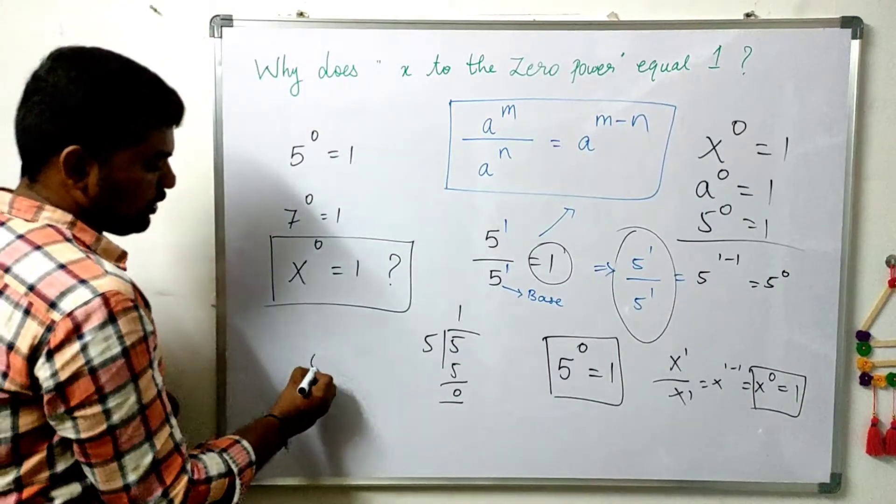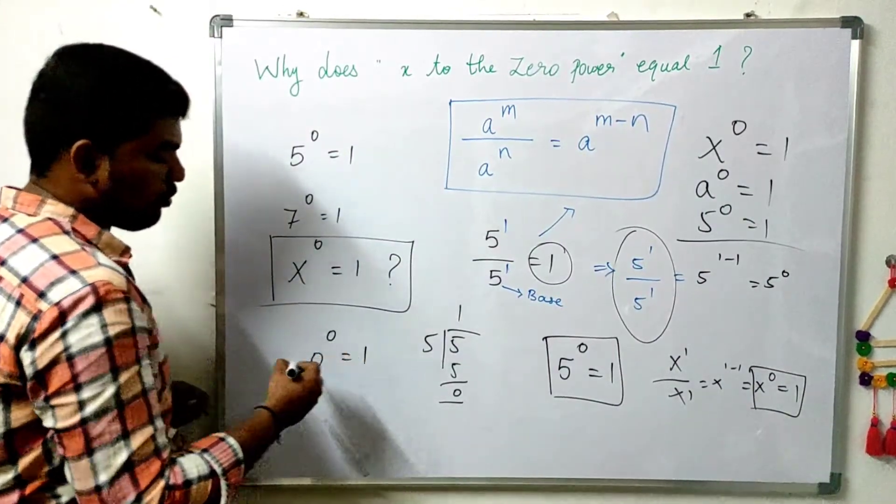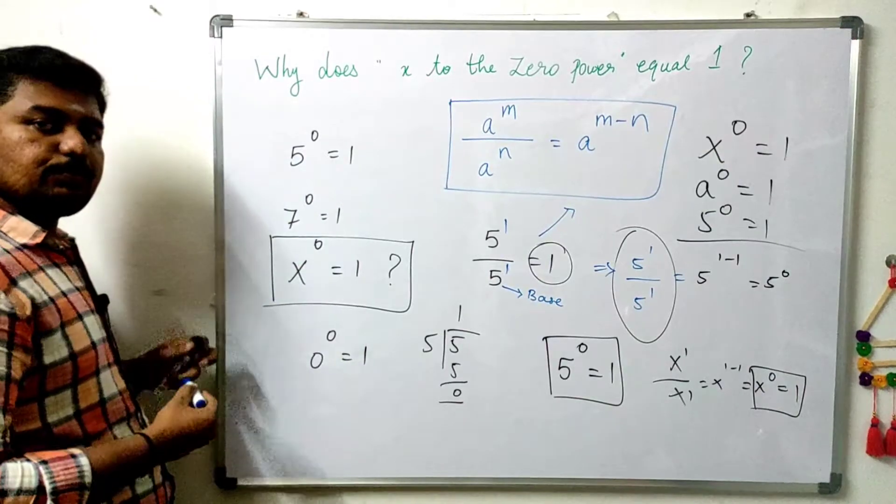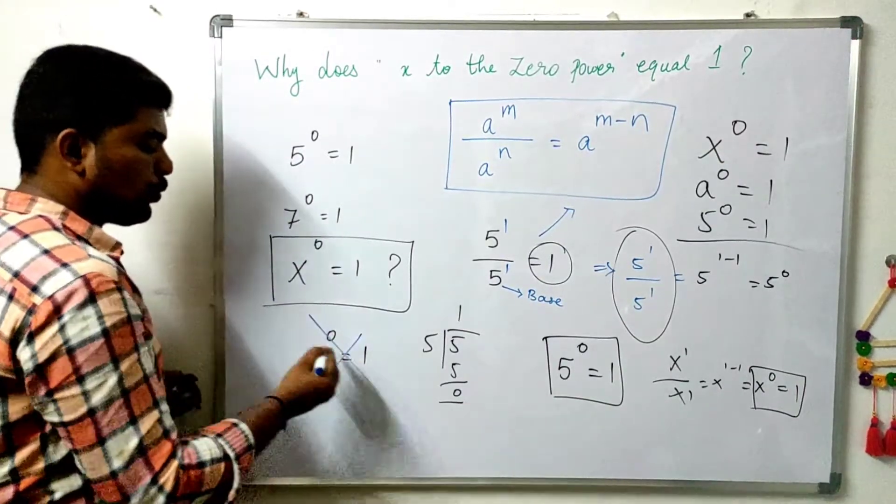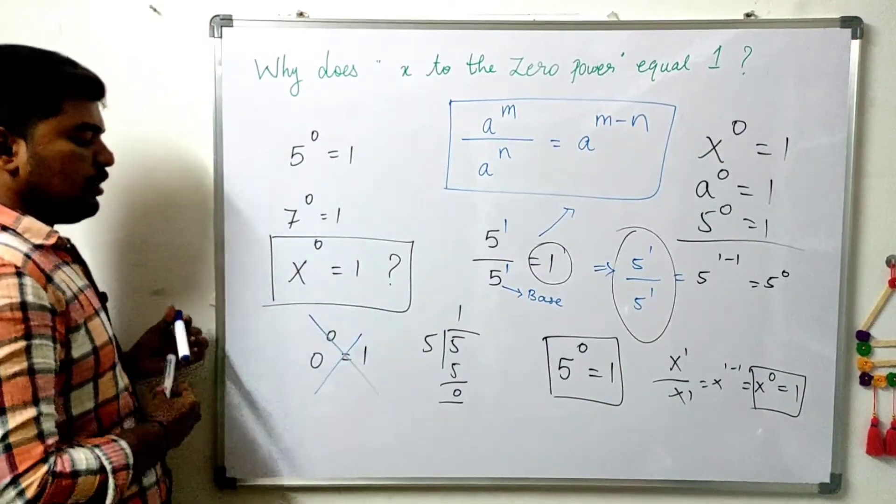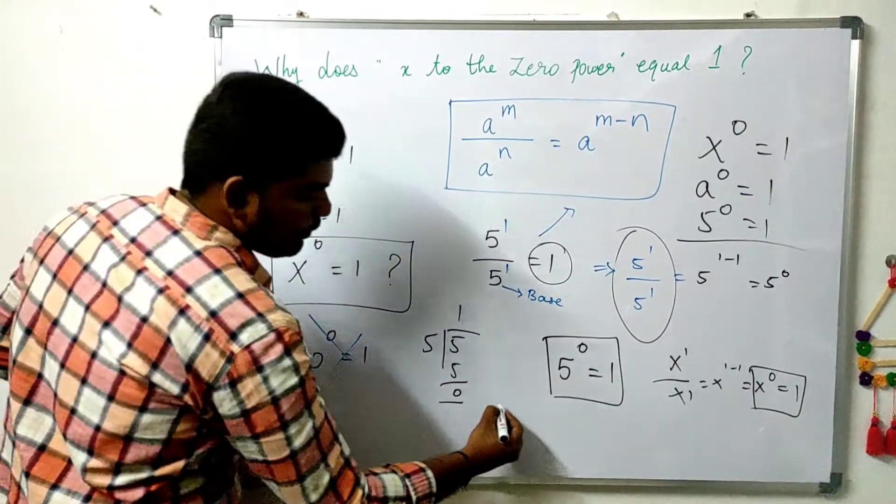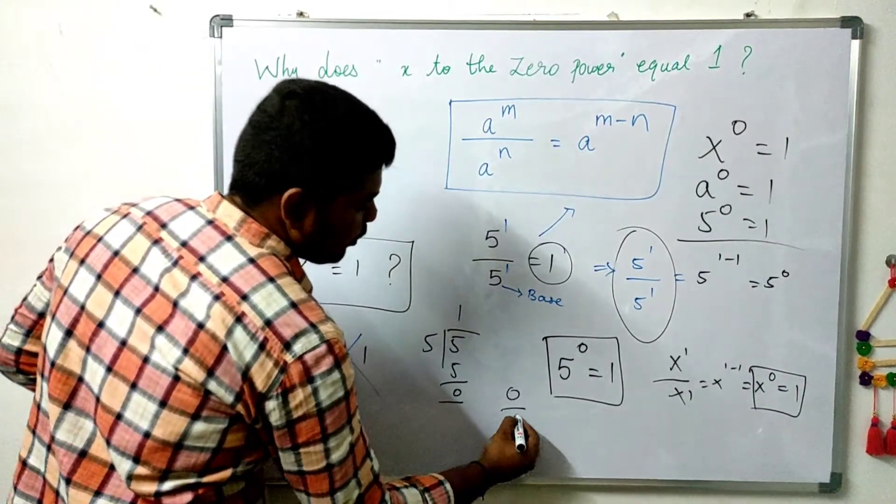x to the power 0, what about 0 to the power 0? Is 1 there? Is it true? No. Because 0 to the power 0 is 0.